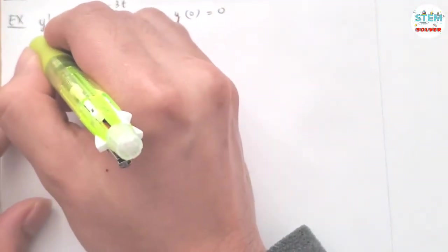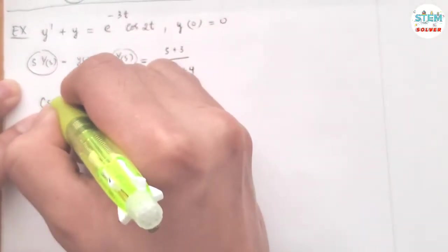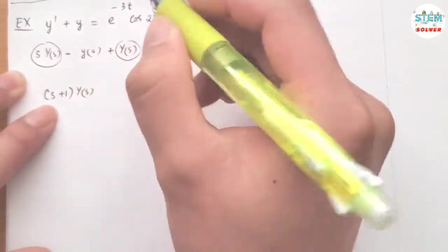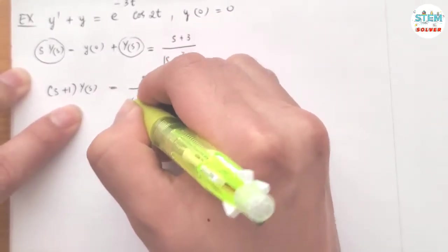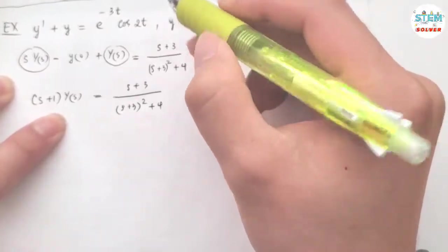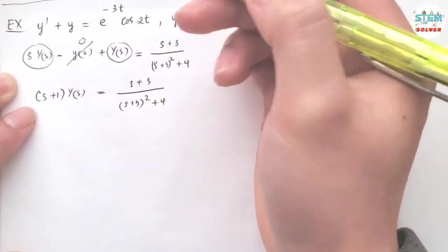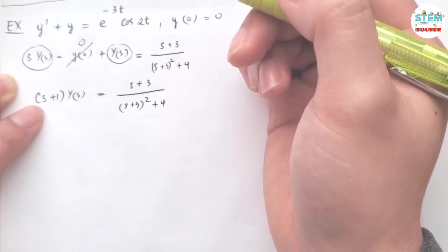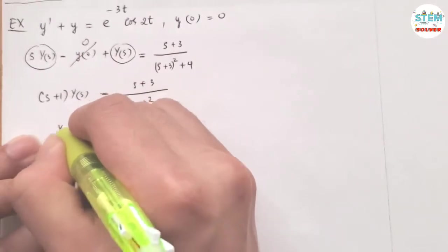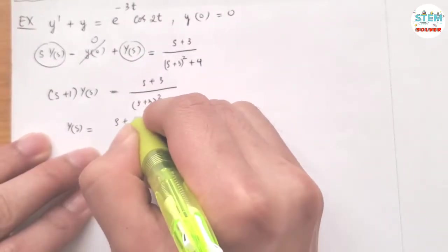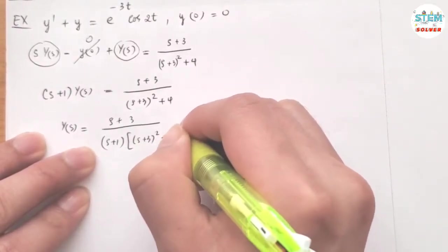Now let's look at the capital Y of s terms. Factoring out capital Y of s, we have s plus 1 times capital Y of s equals s plus 3 over s plus 3 squared plus 4. Dividing both sides by s plus 1 to isolate Y of s, we get Y of s equals s plus 3 over s plus 1 times s plus 3 squared plus 4.